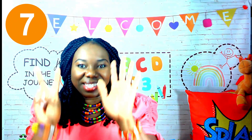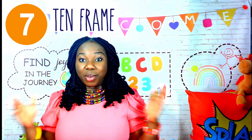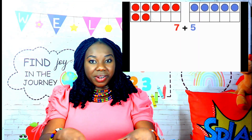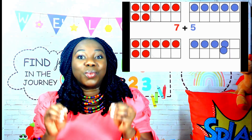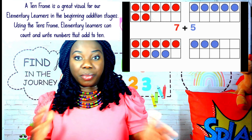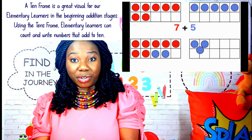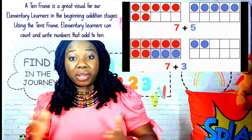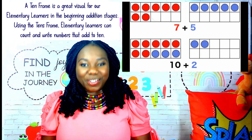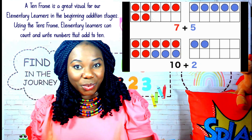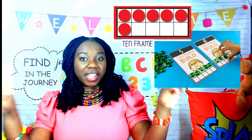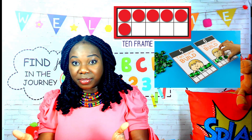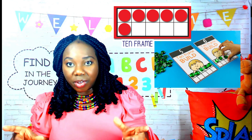Addition strategy number seven: ten frames. The use of ten frames is a common method encouraged for elementary learners. It is important for learners to understand what a ten frame is — ten frames are tools for teaching math that help develop number sense. Number sense is having a good intuition about numbers and their relationships. A ten frame is simply a rectangle with ten equal spaces: five on top and five on the bottom. We use counters or math manipulatives less than or equal to ten on the ten frame.